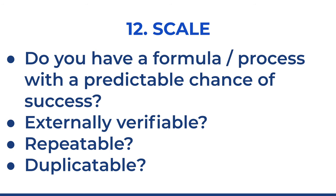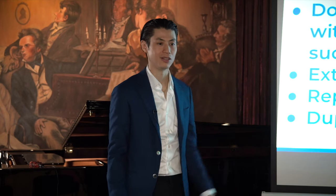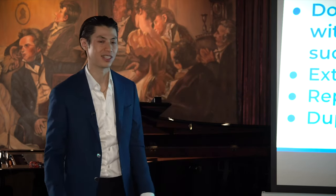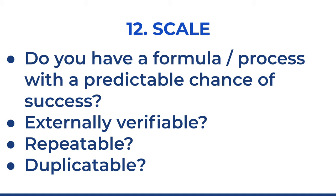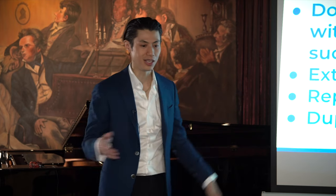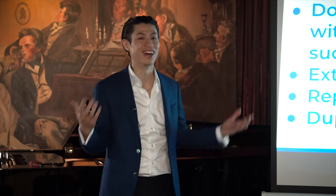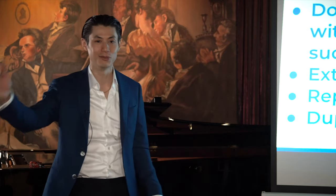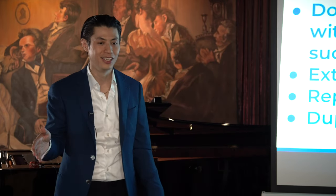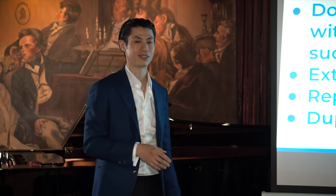What does it mean to scale? Do you have a formula or process with a predictable chance of success? If it's got an 80–90% chance of success, that's pretty good. It doesn't have to be perfect, but it has to be good and predictable. Is it externally verifiable? Can somebody say, 'Yes, this is working, this is successful'? If it's just happening in your mind, it's not really verifiable. Make sure somebody else can look at your process and confirm it's 80–90% successful.